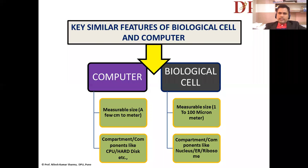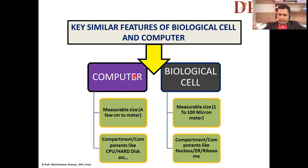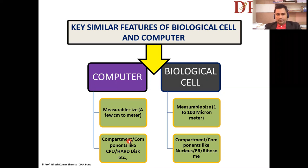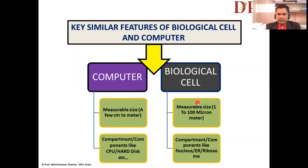Looking at the first comparison: computers as a system have their own physical dimensions — their size can range from centimeters or even less, up to meters, depending on the type. On the other side, the biological cell on average ranges from one micron to one hundred microns in size. There is a huge difference in scale; however, both are defined as a unit or system.